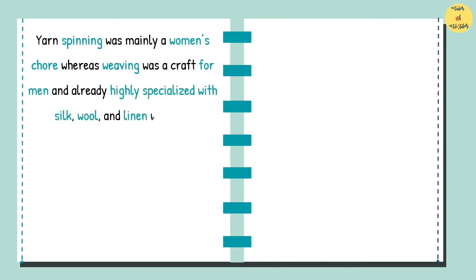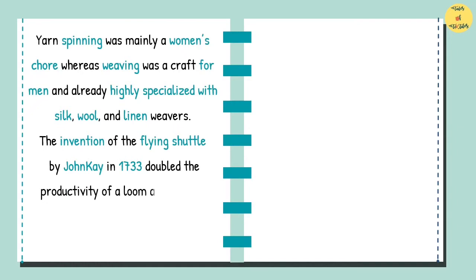The invention of the flying shuttle by John Kay in 1733 doubled the productivity of a loom and led to a sharp increase in yarn demand, yarn hunger.